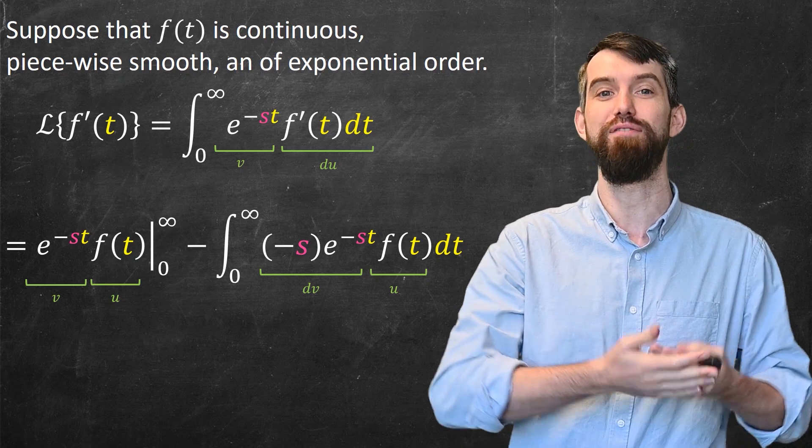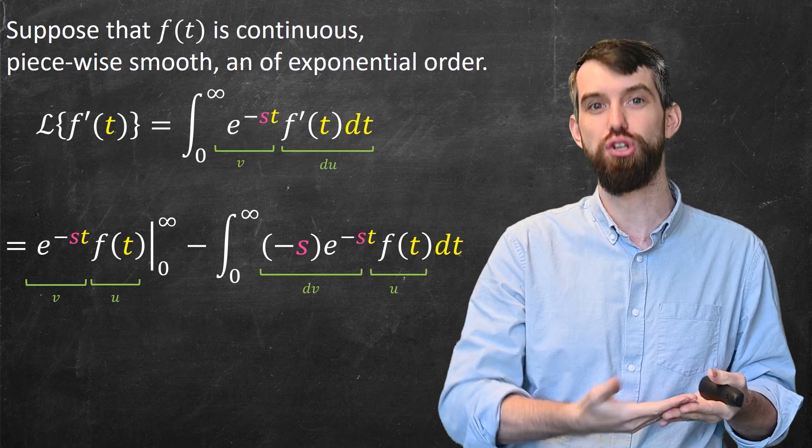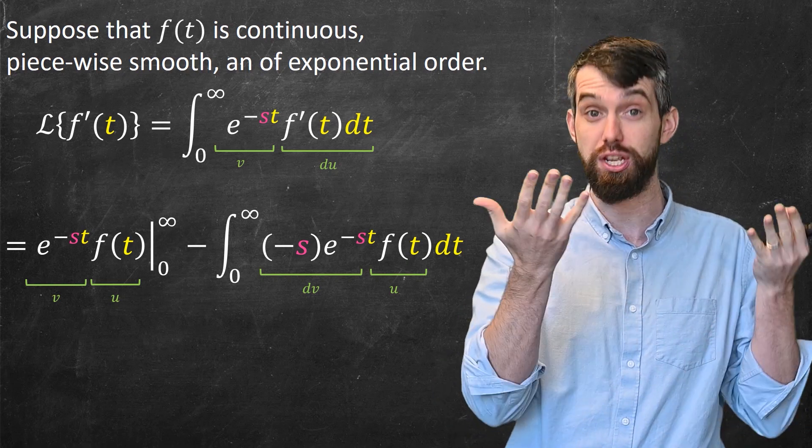Exponential order meant that the function f was smaller than an exponential. As a result, the negative exponential term dominates, and when you plug in infinity, you're just going to get 0.